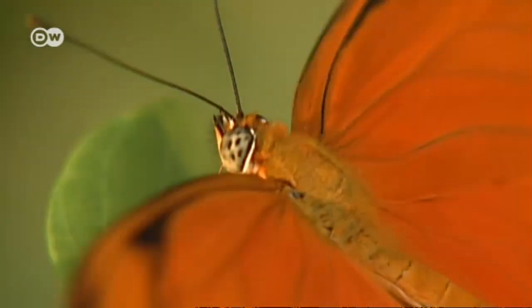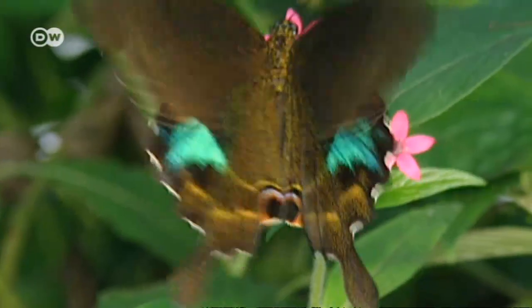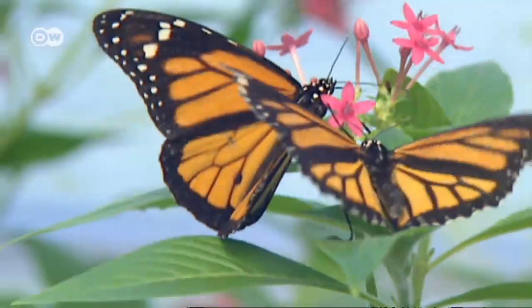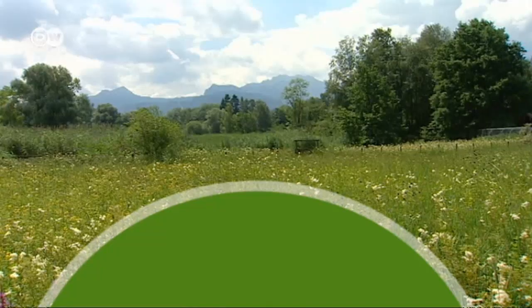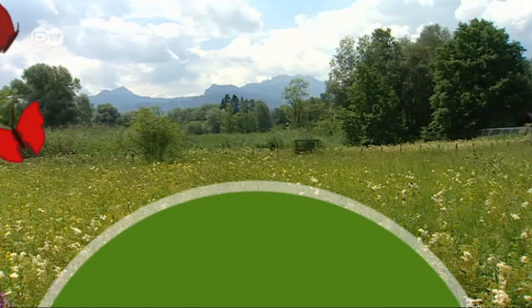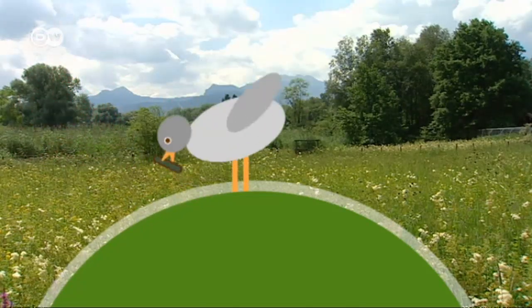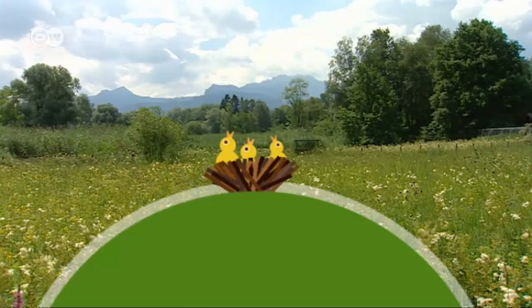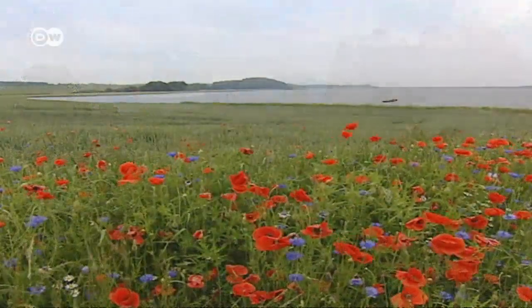Genetic diversity helps species to adapt to environmental change and survive, and that ensures the survival of species that rely on them. Many birds, for example, feed on caterpillars, and cats feed on birds.